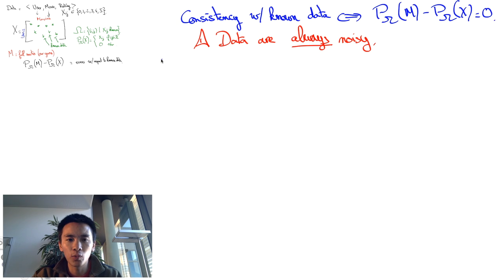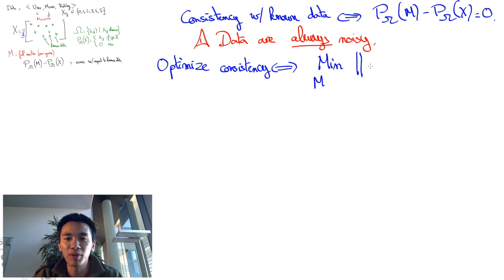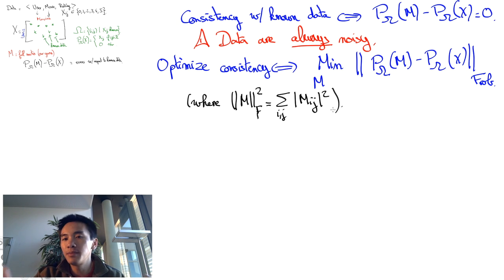So instead, we want to minimize some norm of the difference. What a lot of machine learning researchers do is minimizing the Frobenius norm, also known as the Euclidean norm for matrices, which is simply the square root of the sum of the squares of the entries.